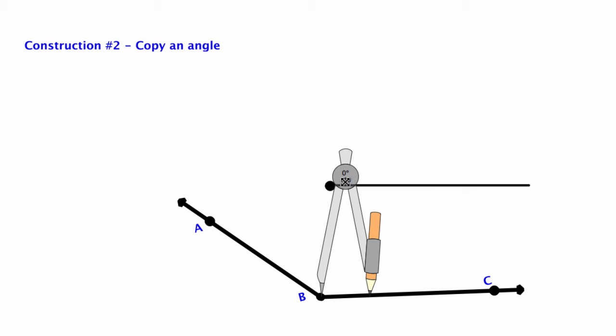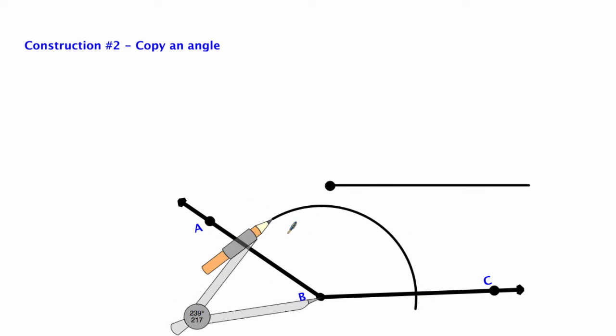Now if it's an obtuse angle you're going to do the same thing. Only it's going to be a little bit bigger here so I'm going to open up my compass. Yay big. I want to copy this obtuse angle. I'm going to swing a long arc. This time because it's obtuse I'm going to swing it all the way across.